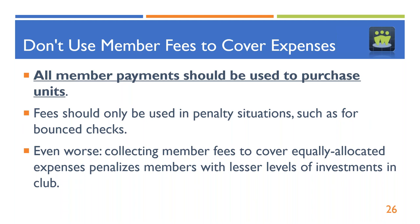The big problem comes if you try to collect fees to cover equally allocated expenses. Instead of recording expenses by capital account percentage, you're recording them on a per-person basis. If you collect fees against those expenses, you're going to penalize members with lower levels of investment in the club — they're going to end up losing more units because of that practice. If you're a member with a high level of ownership relative to other members, it's in your interest to encourage this practice, but it's not fair or equitable at all.